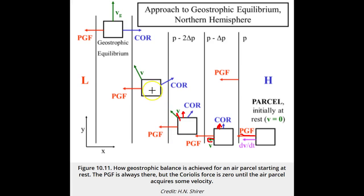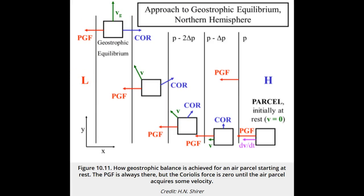Eventually, the PGF and the Coriolis force come into opposition, with the velocity in between and Coriolis to the right of the velocity. In the end, the y component of the force is zero again, so that the air parcel remains at the geostrophic velocity.